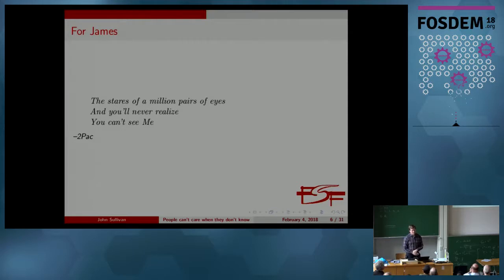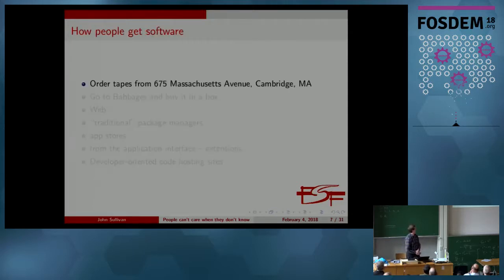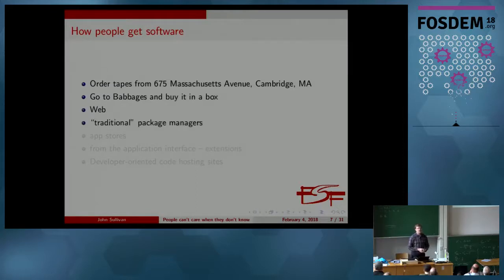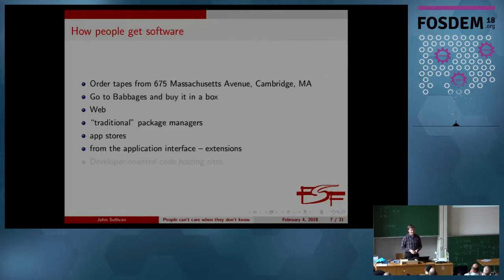To start with, we need to look at the ways that people get software. They download it from the web. They use a package manager in their Linux distribution. They get it from app stores targeting their mobile devices. And from the application interface itself — programs like LibreOffice and Firefox have an actual menu bar option where you pick tools and then add-ons or extensions, which takes you to a website that's integrated within the application. I consider that a separate category.